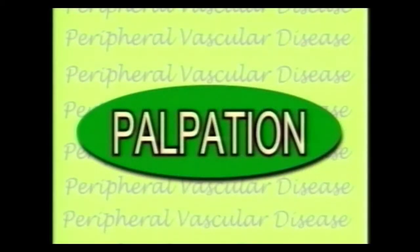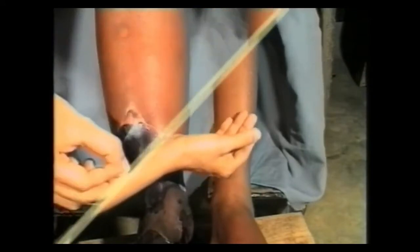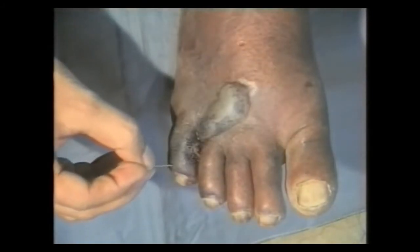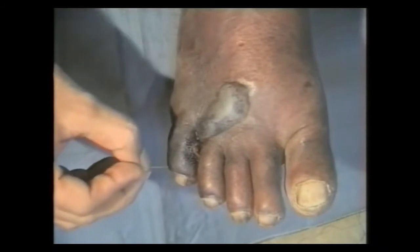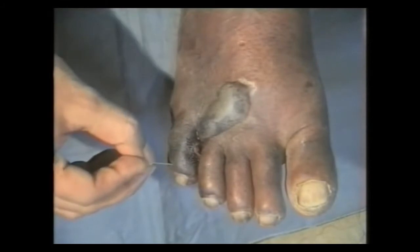Now let us proceed to palpation. On palpation, first palpate the gangrenous area. In a dry gangrene, the skin is cold, non-tender, hard and greasy, with no sensations. In a wet gangrene, the skin is turgid and edematous with loss of sensations, but it may be tender if gangrene is not fully established. If the skin is edematous, palpate carefully all over the gangrenous and proximal area for crepitations to rule out an anaerobic infection like gas gangrene.